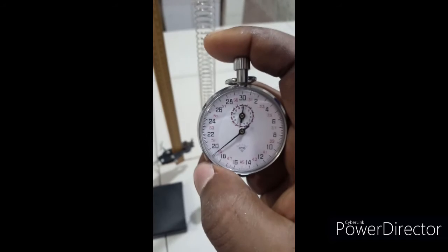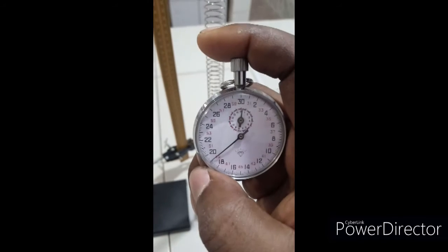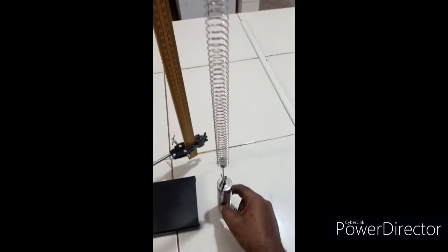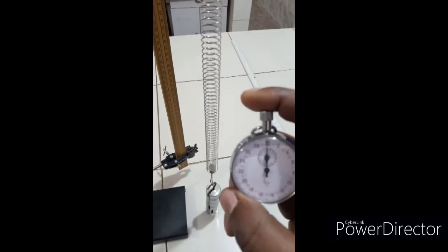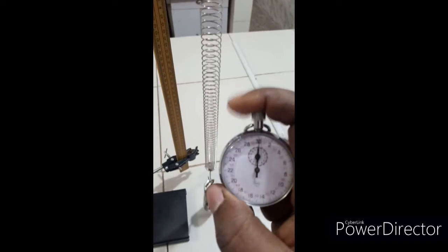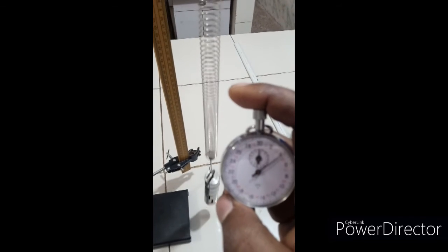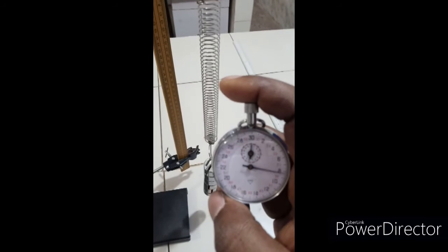So here's my time: 19.1 seconds. So I'm going to quickly repeat this experiment again to find out what my time will be. So I'm ready for the second round. 1, 2, 3, 4, 5, 6, 7, 8, 9, 10, 11, 12, 13, 14, 15, 16, 17, 18, 19, 20.